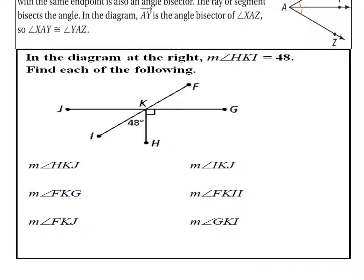All right, this is section 1.5, and this is another example I'm going to look at here. It says, here in the diagram at the right, angle HKI is 48 degrees. Find each of the following.